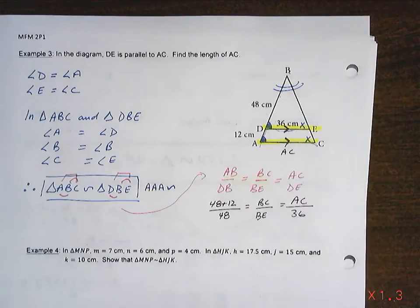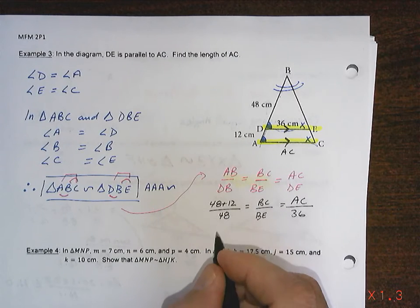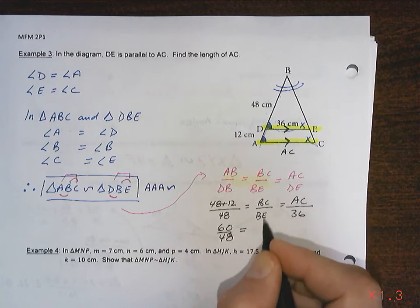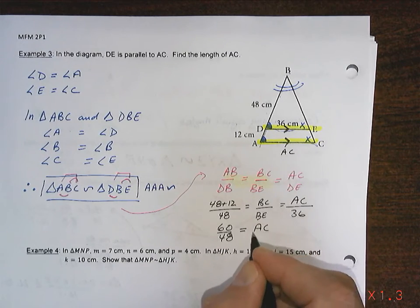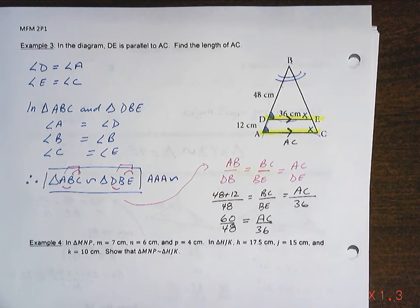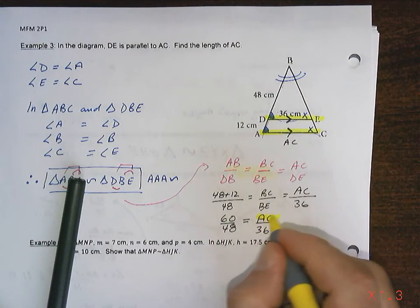So what I have here is 48 plus 12 is 60 over 48 equals, don't know this one, AC over 36. I can solve for AC, which is what the question asked for.